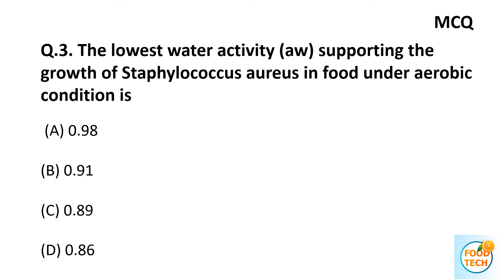Question 3: The lowest water activity supporting the growth of Staphylococcus aureus in food under aerobic conditions is: A. 0.98, B. 0.91, C. 0.89, D. 0.86.